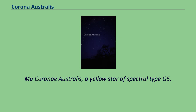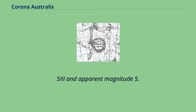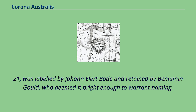Nu Corona Australis, a yellow star of spectral type G5.5 IV and apparent magnitude 5.21, was labeled by Johann Elert Bode and retained by Benjamin Gould, who deemed it bright enough to warrant naming.